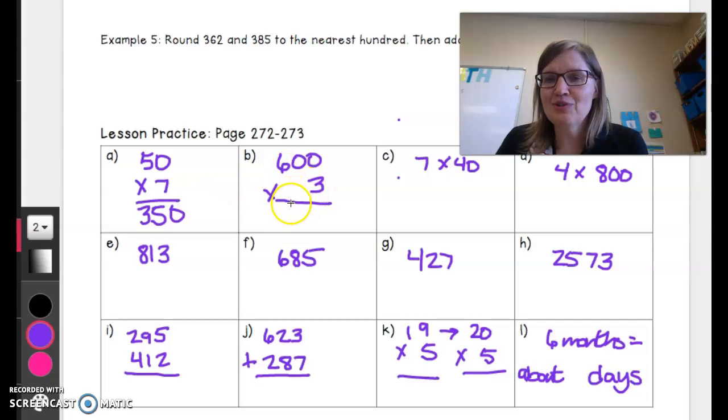600 times 3. I know that 3 times 6 is 18 and then I put two zeros down.